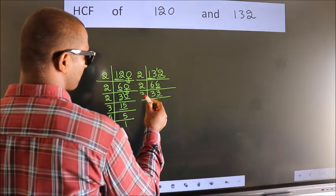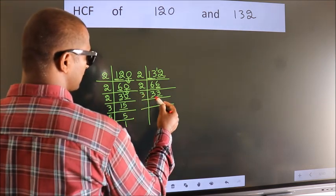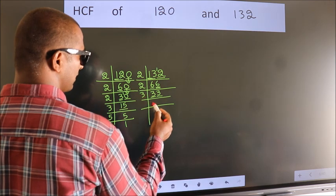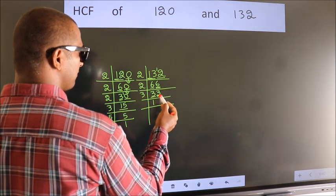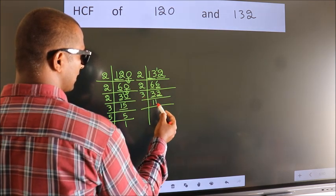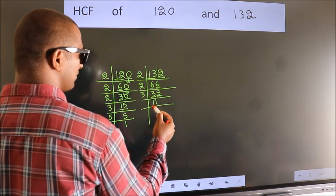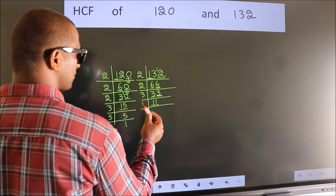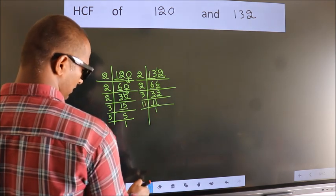So take 3. First number 3, when do we get 3 in 3 table? 3 once 3. The other number 3, when do we get 3 in 3 table? 3 once 3. Now 11 is a prime number, so 11 once 11.